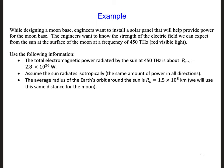Let's work through an example that relates to your homework. While designing a moon base, engineers want to install a solar panel that will help provide power for the moon base. The engineers want to know the strength of the electric field we can expect from the sun at the surface of the moon at a frequency of 450 terahertz. That's red visible light.